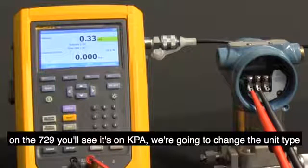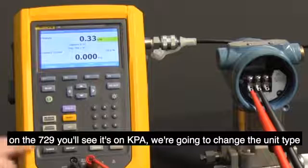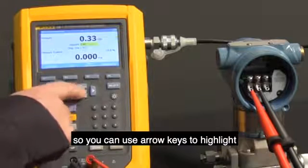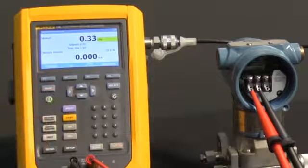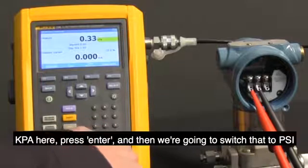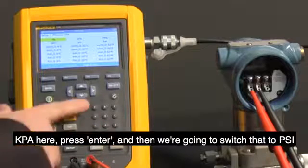On the 729, you'll see it's on KPA. We're going to change the unit type, so you can use the arrow keys to highlight KPA here. Press Enter, and then we're going to switch that to PSI.